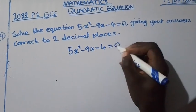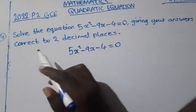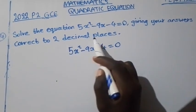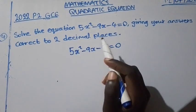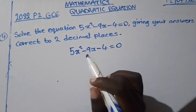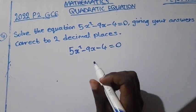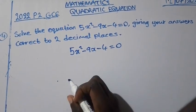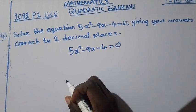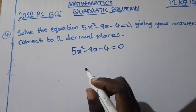Now how can you tell? When you see this condition, correct your answer to 2 decimal places, just know that this question has no factors. So you cannot apply factorization method, but you go with the quadratic formula without wasting much of your time. So we shall use the quadratic formula.